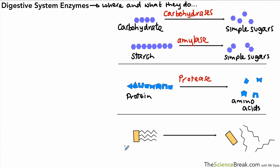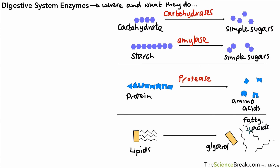Finally, we have the digestion of lipids — fats and oils found in food. These are broken down into fatty acids and glycerol: three fatty acid chains and a molecule of glycerol. The enzymes that take care of this are the lipases, so lipases break down lipids into fatty acids and glycerol.